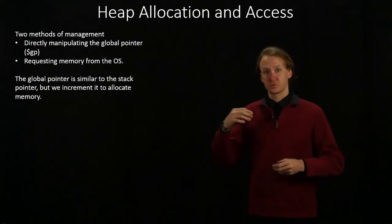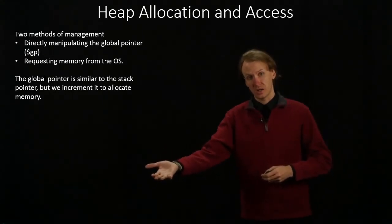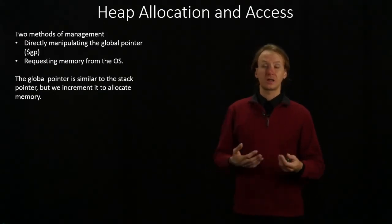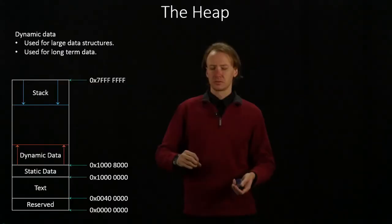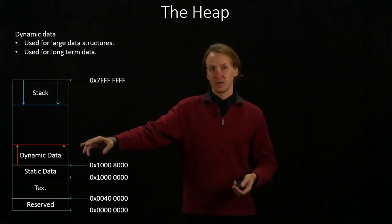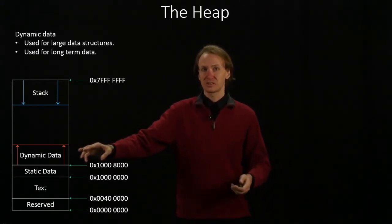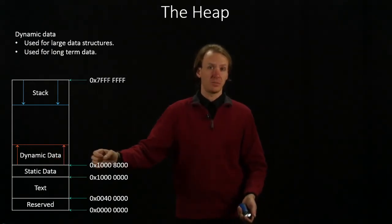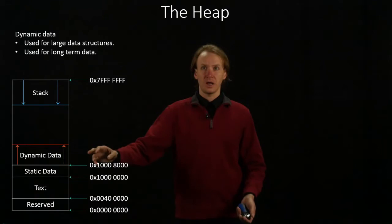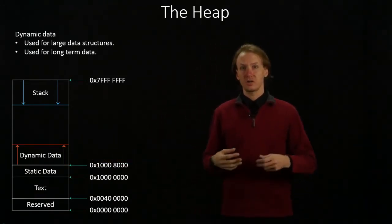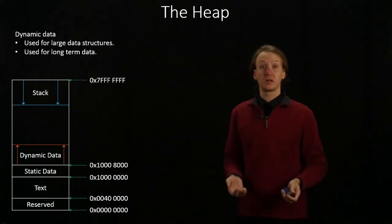But because we start from the bottom of our dynamic memory and move upwards, we would increment our global pointer to allocate memory. In this case, any address in the region of memory where their address is less than the value of the global pointer is considered allocated memory. Any addresses that are equal to or greater than the global pointer are unallocated, so all of that memory is still available.